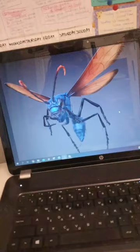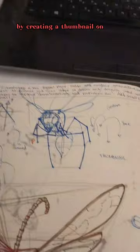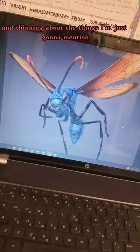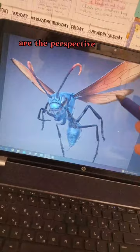So I start analyzing my reference by creating a thumbnail in my sketchbook and thinking about the things I'm just gonna mention. So I first think of the perspective axis which is gonna be the x-axis going like this, the y-axis, and then there is the z-axis.